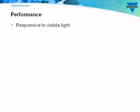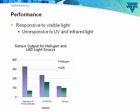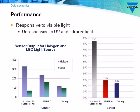As we saw in the video, an ambient light sensor must respond to visible light but be unresponsive to UV and infrared light. One way to compare performance is to calculate the ratio of response to halogen versus LED light — the closer to one, the better. The standard silicon photodetector has a ratio of 4.71. The competitor's part, the SFH3710, is at 1.45. Vishay has the best performance with a ratio of 1.2, making its ambient light sensors responsive to visible light and unresponsive to UV and infrared light.